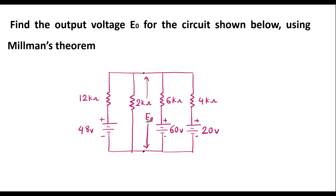E0 is nothing but the voltage across the 2 kilo ohm resistor. As we know in Millman's theorem, the branch in which we are calculating the voltage must first be removed. So here we are supposed to remove this 2 kilo ohm resistor from the circuit. If we remove it, it will become open at these two points. I will call this point A and this point B.